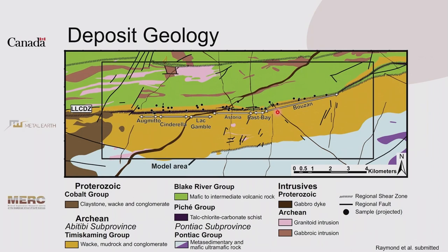On the geology map, we have to the north the Blake River Group, Timiskaming sediments, and Pontiac sediments. The trace of the Larder Lake-Cadillac break is considered to be located in a narrow panel of ultra-mafic rocks of the Pichet Group. The mineralization includes several mineralized oreshoot areas in Ogmito, Cinderella, Gamble, and Astoria, and then to the east, East Bay and Bouzain are virtually barren in gold mineralization.